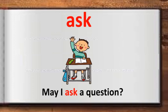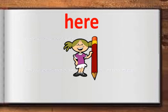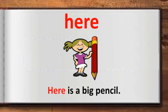The word is 'here.' What does 'here' mean? Here means next to or at this place. Look at the image — a girl is holding a big pencil. I have used the word 'here' in a sentence: 'here is a big pencil.' The girl is holding the pencil next to her and saying 'here is a big pencil.'